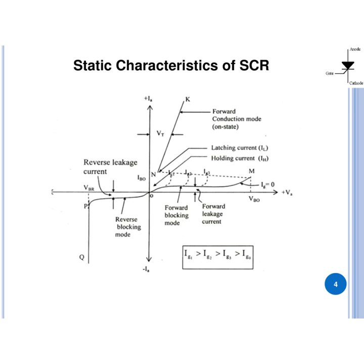In the last lecture we discussed about the static characteristics of SCR. We observed how the SCR can be brought from blocking state to conduction state with and without gate current. This figure represents the VI characteristics of SCR with gate current. Now today we discuss about what is meant by latching and holding current.